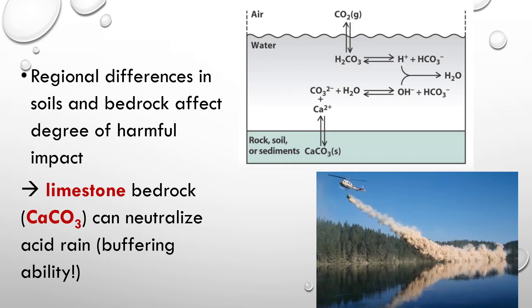There are regional differences in soils and bedrock when it comes to acid rain vulnerability. Limestone can actually neutralize acid rain because of its buffering ability. The calcium carbonate helps reduce the impact of acid rain — it dissolves to create calcium and carbonate ions. The carbonate combines with water to form carbonic acid, which eventually breaks down into water and CO2. This is also an important process when we talk about ocean acidification.